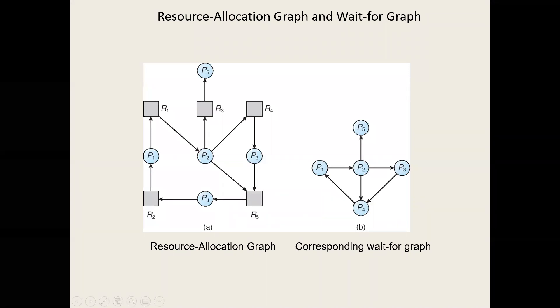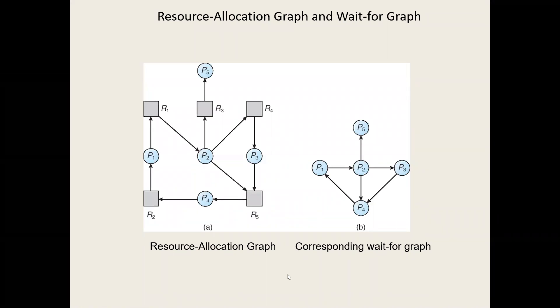You can see in the wait-for graph: P1 is waiting for P2, P2 is waiting for P3, P3 is waiting for P4, and P4 is waiting for P1 again.